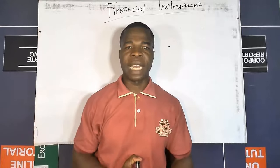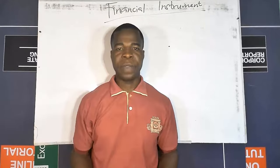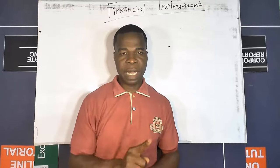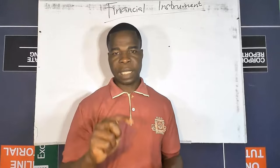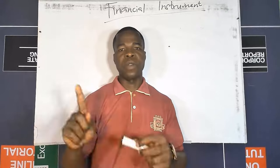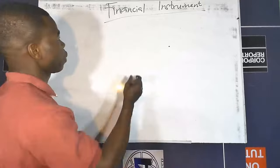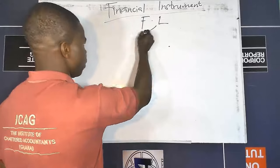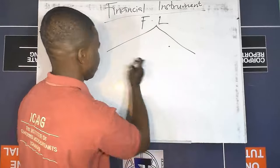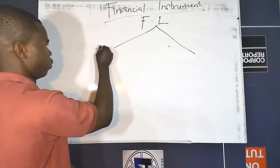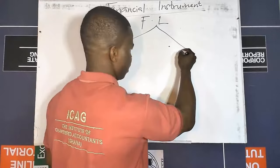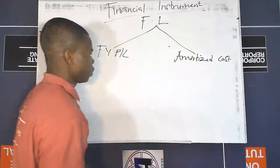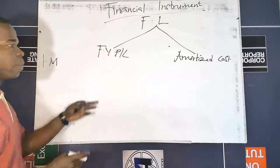Having understood the classification of financial instruments, we can now look at measurement. The measurement of financial instruments solely depends on the classification, so you must know how to classify before you can measure. Let's start with the measurement of financial liabilities. Financial liabilities can be classified under two main headings: fair value through P&L and amortized cost. Let's look at the initial measurement for each.